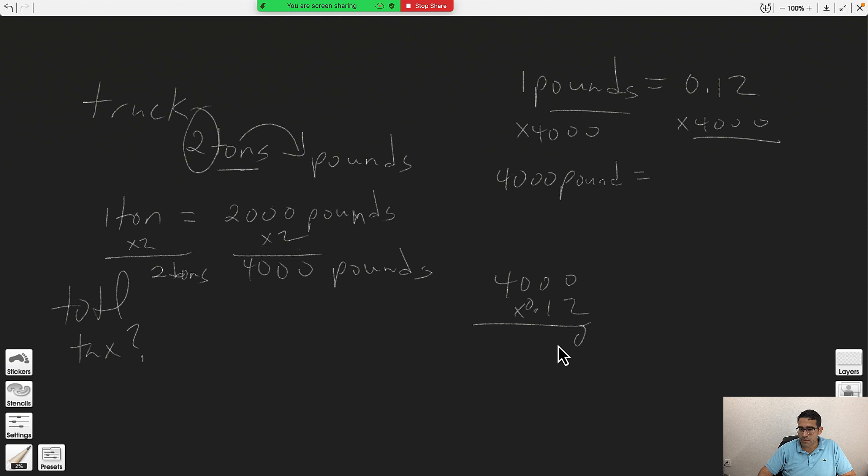Multiplying 4,000 by 0.12: 2 times 4 is 8, 1 times 4 is 4. Two decimal places back, two forward. So 4,000 pounds is going to cost you a tax of $480.